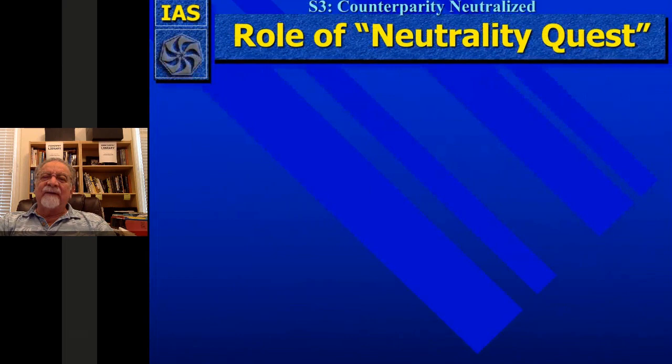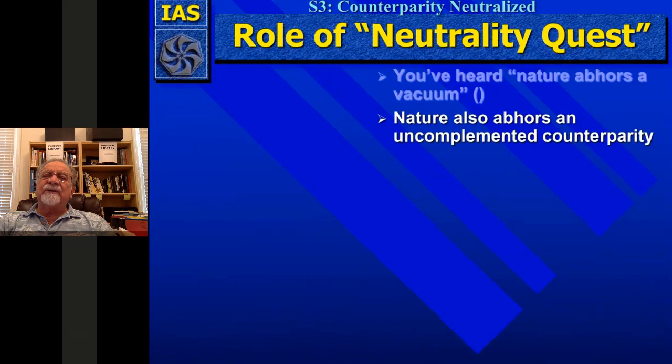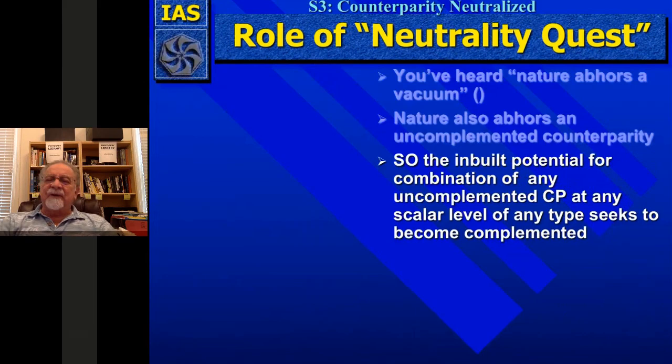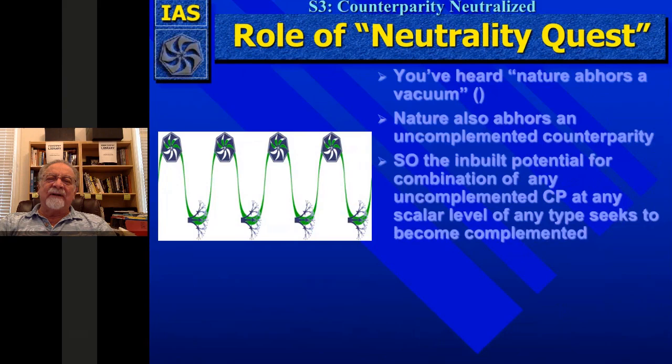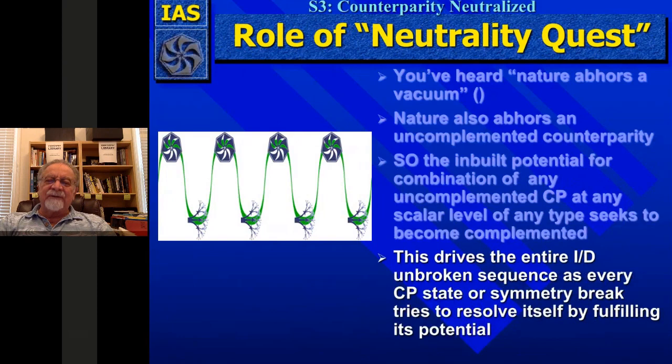The inbuilt potential for a combination of any uncompleted counterparity at any scalar level seeks to become complemented — we call it the neutrality quest. With that, we get the unbroken sequence of origins of new systems. This drives the entire ID unbroken sequence. As I showed you before, in every place, this is the same process.